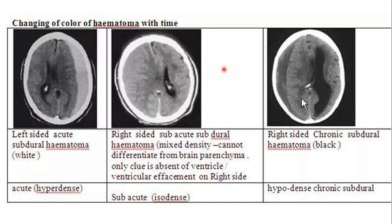The density of the hematoma changes over time, and this is very important to recognize. In the acute stage, the blood clot is dense and appears white — an acute or hyperdense hematoma, whether subdural or epidural. After a while, in the sub-acute stage, the blood density starts to decrease until it reaches almost the same density as the adjacent brain parenchyma, so you cannot see a specific mass like you did before.